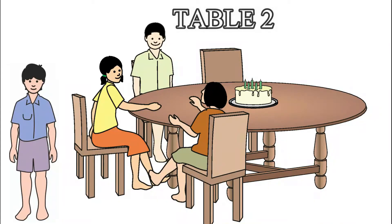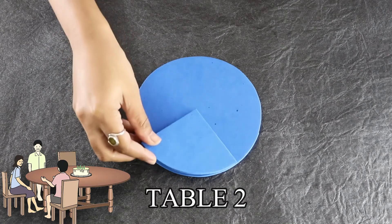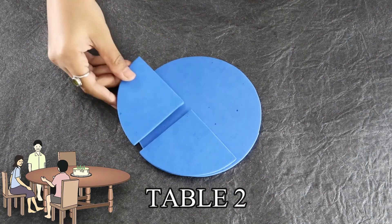At table 2, there are three friends and Arun will be the fourth one. Arun thinks that the cake will be divided into four parts if he goes to table 2.